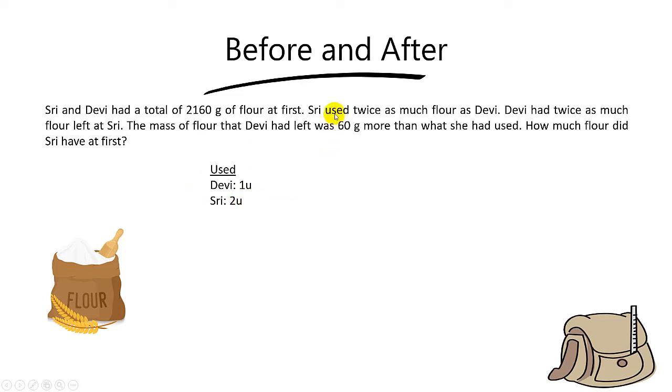Does it make sense to you? Because of this sentence here, Shree used twice as much, so therefore the use would be one unit for Debbie and two units for Shree.